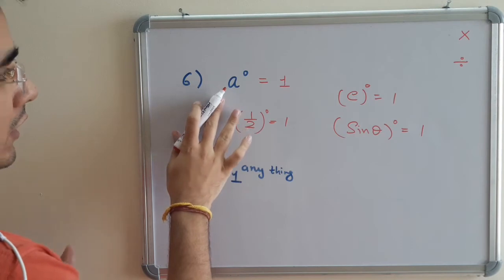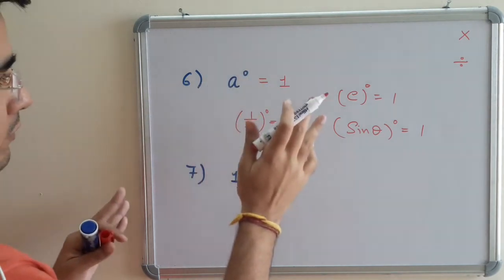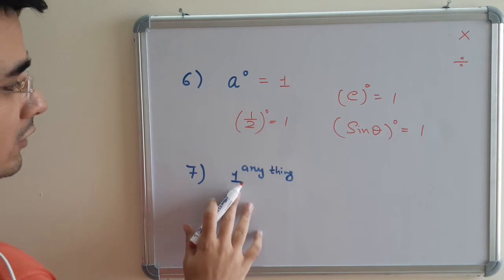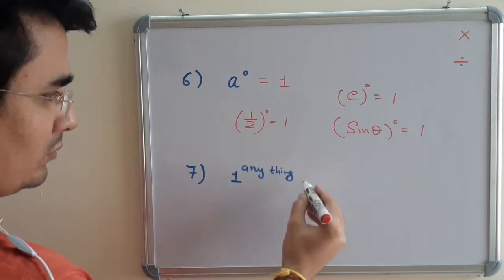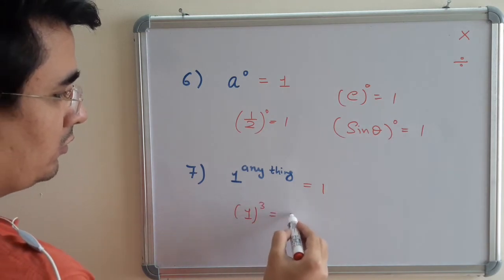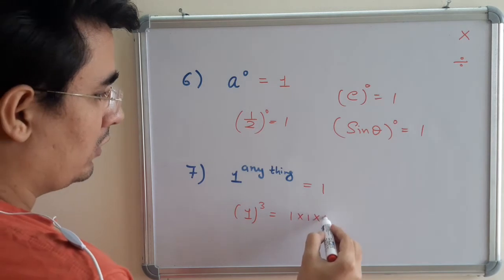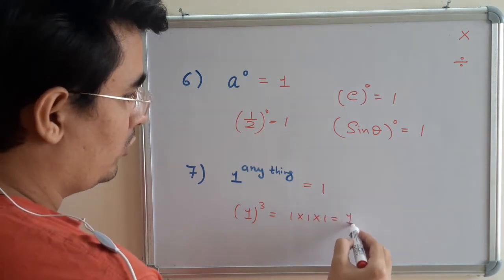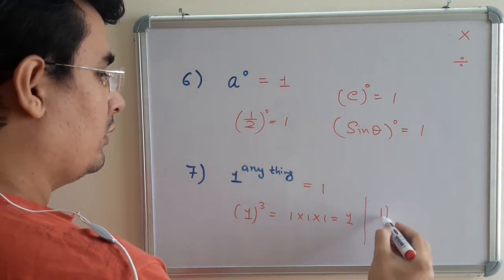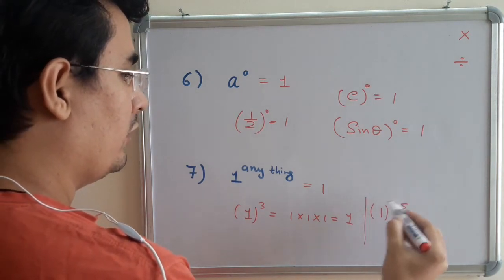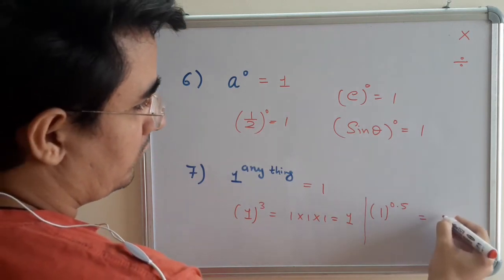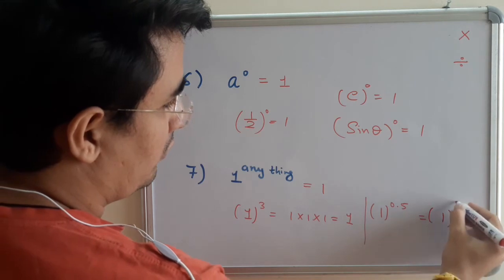Now coming to the sixth thing: 1 raised to the power anything remains 1. Why is it so? 1 raised to the power 3 is 1 times 1 times 1, it is still 1. When I say anything it means anything. So 1 raised to the power 0.5, it will lead to some other concept also. Just be patient. 1 raised to the power 1/2. For this I will be taking the next law.